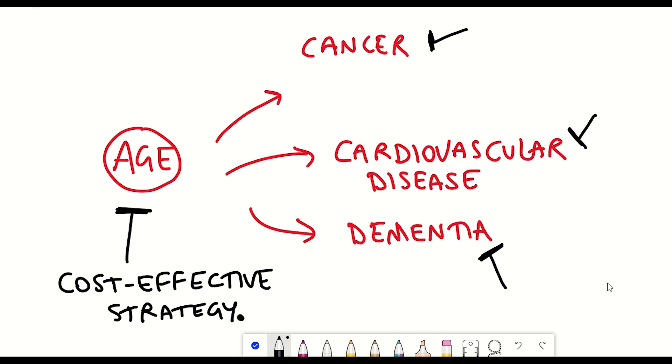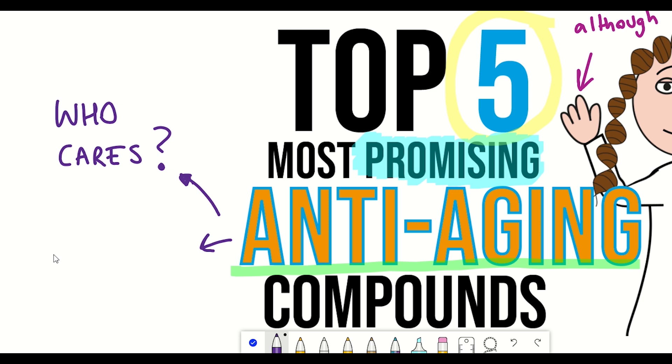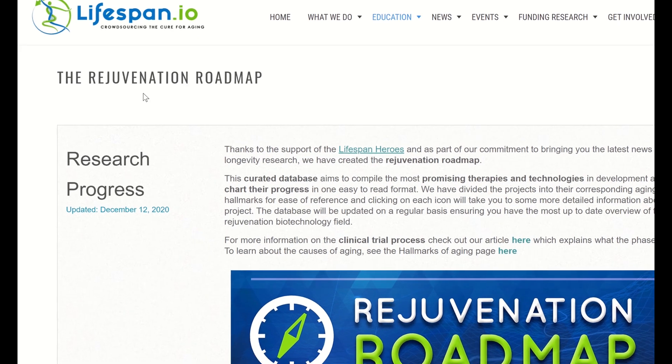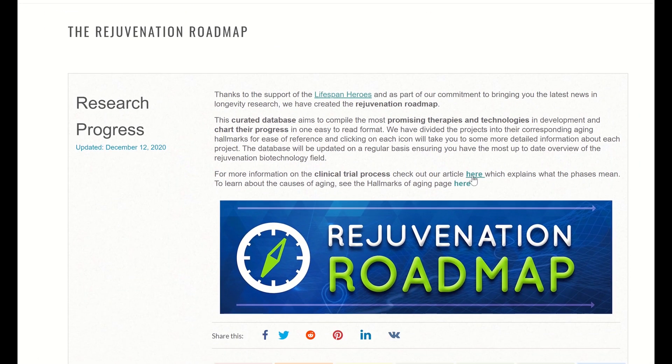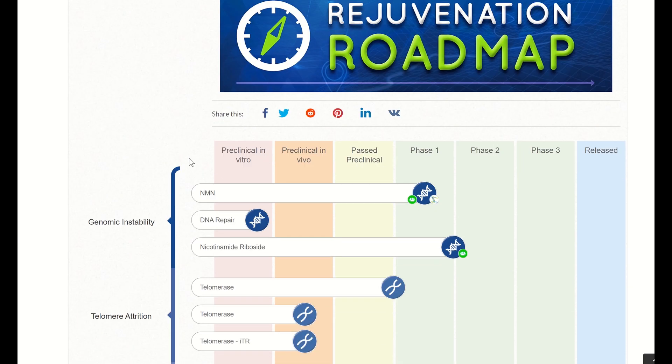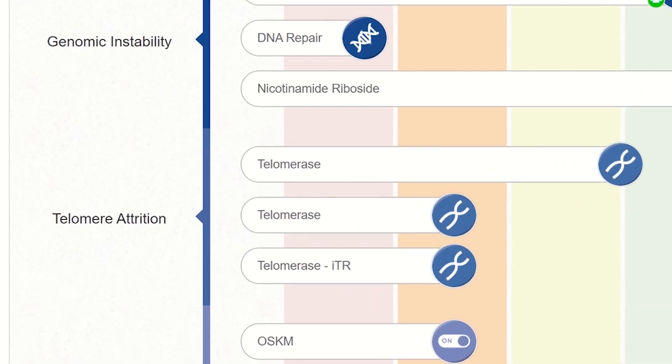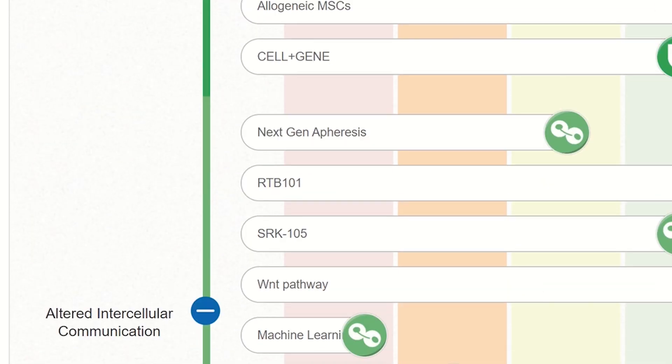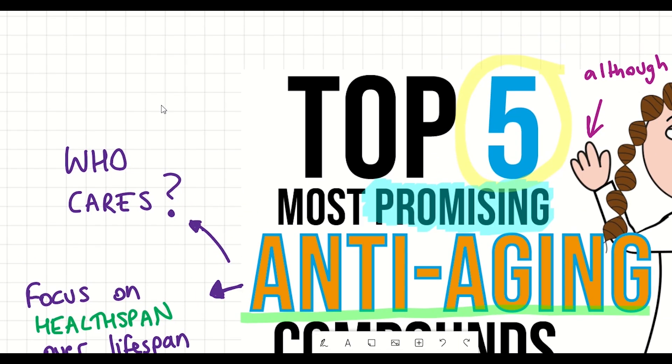So the five compounds that I'm going to tell you about, I've chosen based on what potential I think they have in terms of improving health span instead of lifespan. However, by improving health span, there may also be benefits of increasing lifespan as well. This is why I particularly like LEAF's rejuvenation roadmap, because they split up these different compounds in terms of their effect by looking at which different hallmarks of aging they're most likely to have an impact on. So in no particular order, here are my top five most promising anti-aging compounds.